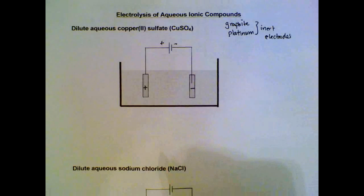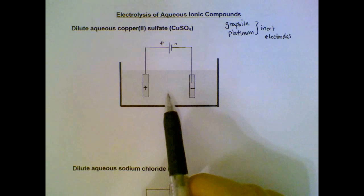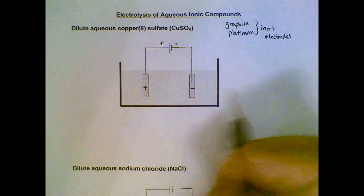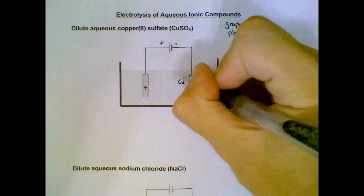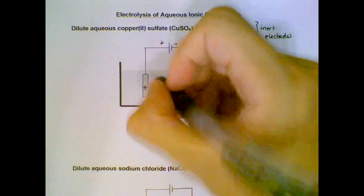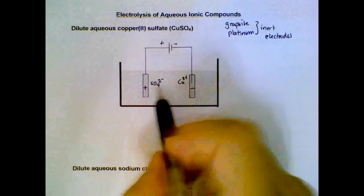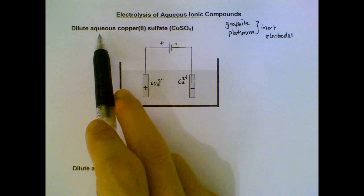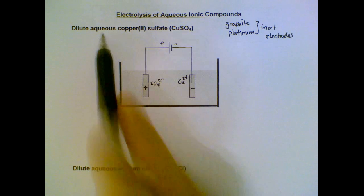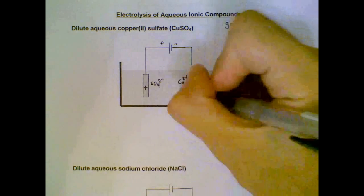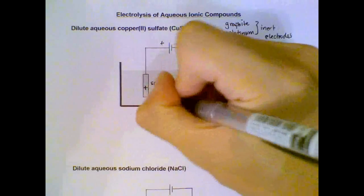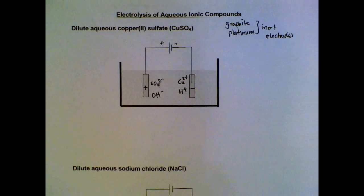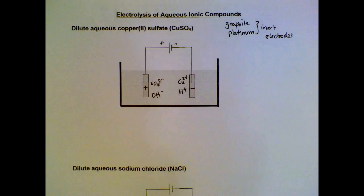After assigning the terminals and the electrodes, we will figure out the ions present in the electrolyte. We have copper sulfate, so for convenience I will put the positive ion, Cu²⁺, next to the negative terminal, and the sulfate ion, negatively charged, at the positive terminal. Since it is in aqueous state, water is present and contributes H⁺ and OH⁻ ions as well. So we have positive charges together and negative charges together.